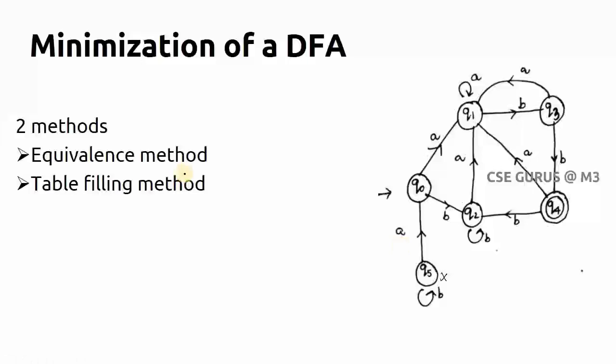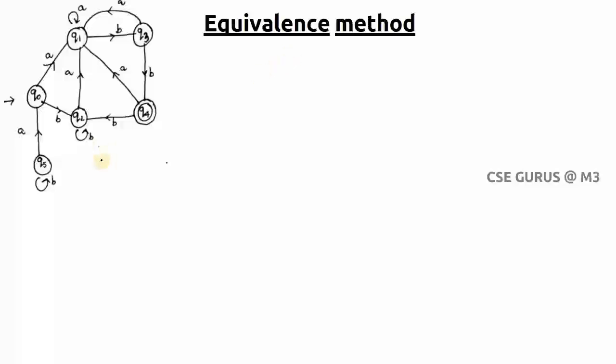There are two methods to solve this: one is the equivalence method and the other is the table-filling method. We will solve the same problem using both methods to find the minimized DFA. First, we will go through the equivalence method.